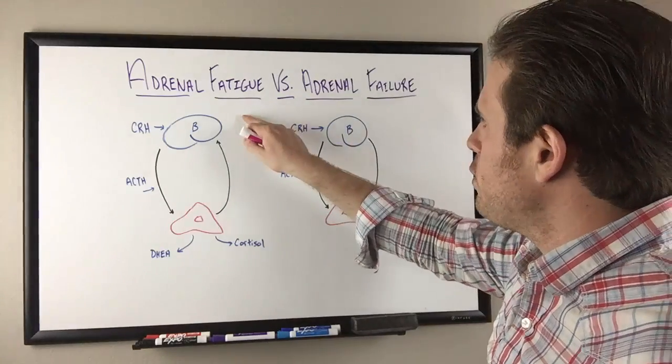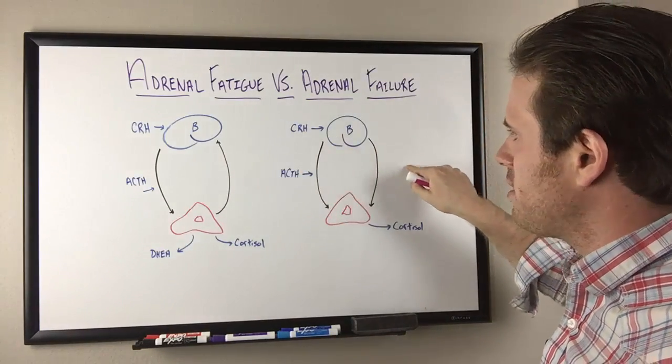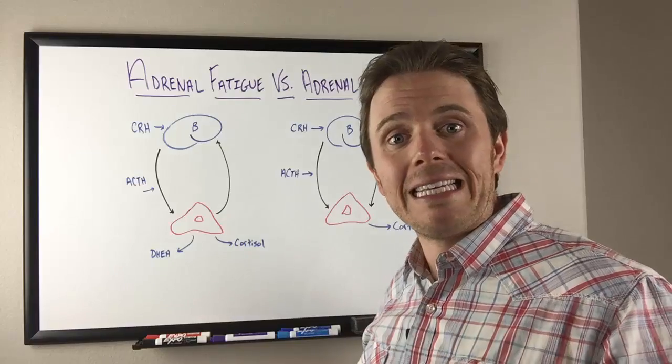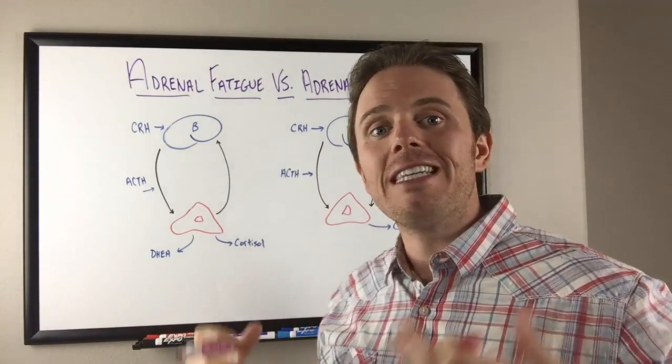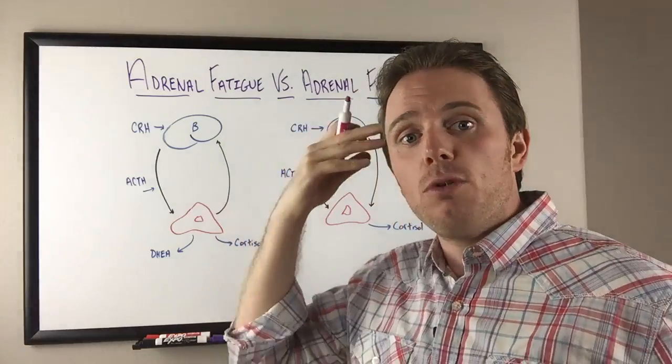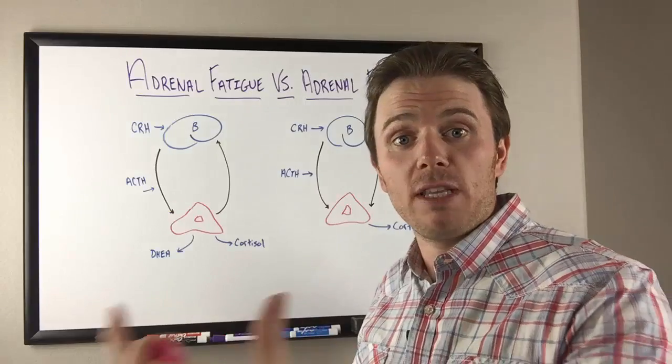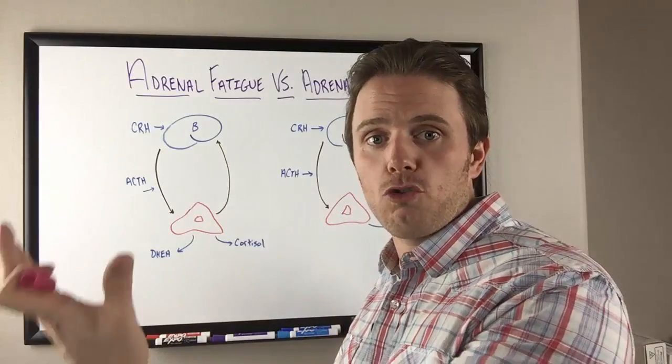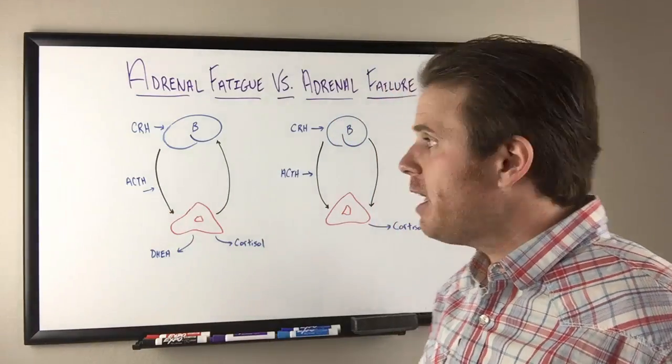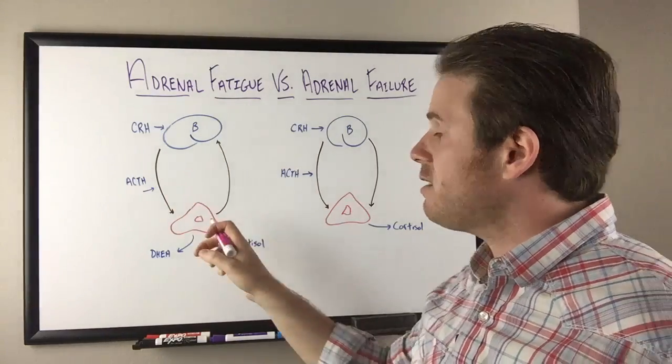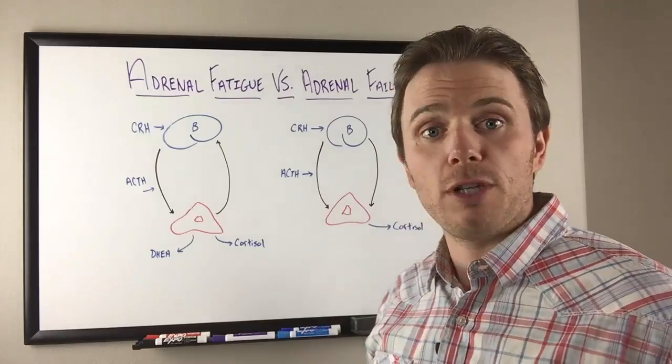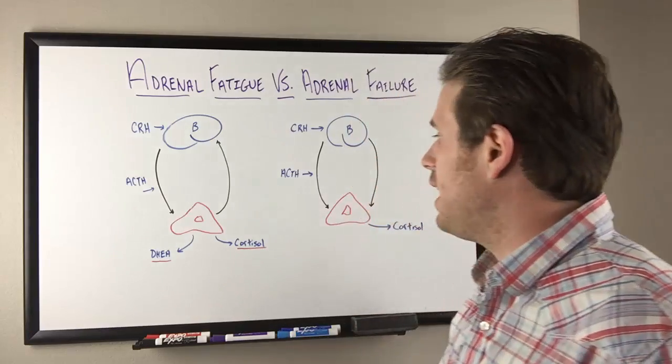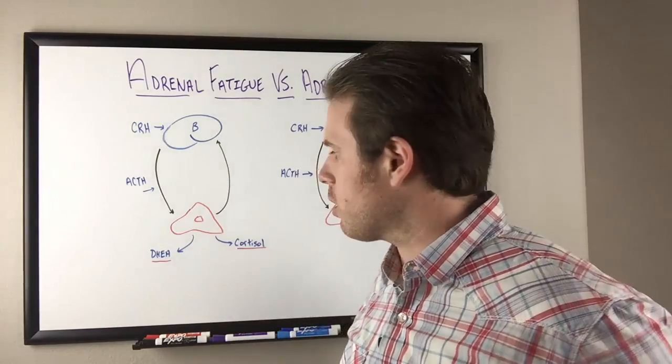Let's break that down. Adrenal fatigue will be on this side, adrenal failure on this side. In normal physiology we have corticotropic releasing hormone, CRH, from the hypothalamus that goes downstream to the pituitary and stimulates ACTH, adrenal corticotropic hormone. That ACTH goes in our bloodstream and hits our adrenal glands and stimulates cortisol production. We'll even see DHEA production as well.